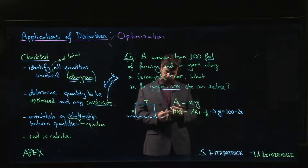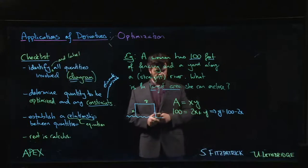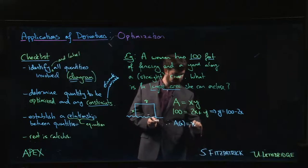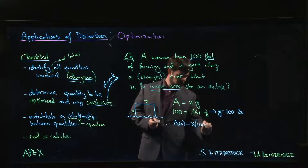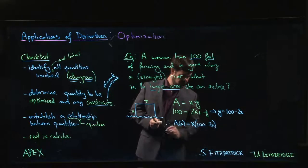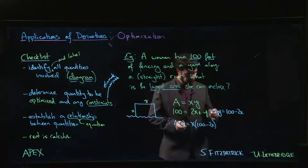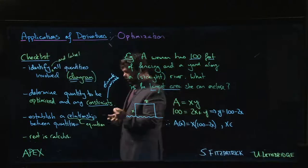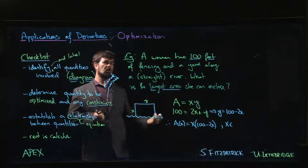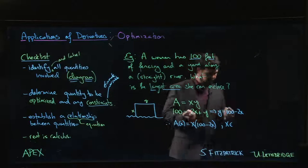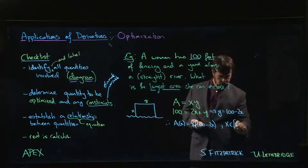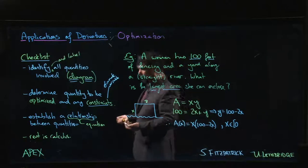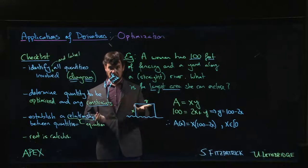And if we make that substitution, what we get is area as a function of x is x times y, but y is 100 minus 2x. And we might say, okay, are there any restrictions on the domain here? Well, we're talking about length, so we're dealing with distances. Distances can't be negative. Really, it can't be 0 either, but including 0 gives us a closed interval which gives us a well-defined problem in terms of the extreme value theorem.